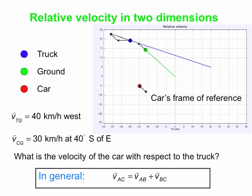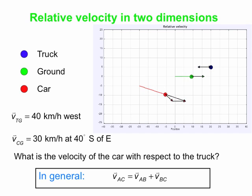To get to the truck's reference frame, we start with the ground reference frame and subtract off the velocity of the truck with respect to the ground from everybody. That gives the truck a net velocity of zero. A stationary tree now moves in an easterly direction with respect to the truck — we've subtracted the truck's westward velocity, which is like adding 40 kilometers per hour east to everything. The car's velocity vector with respect to the ground goes sharply down-right; adding the negative of the truck's velocity (40 km/h east) gives us the longest side of a triangle — the velocity of the car with respect to the truck, which is what we're after.